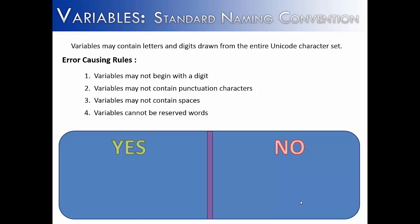The fourth rule is variables cannot be reserved words. As you familiarize yourself with Java, you'll find that there are several words specific to the language. It's not a huge set of words, but it is enough to be wary of. You cannot name a variable void, or class, or this, because all of these are words used specifically for coding in Java. If you try to name them this way, the computer will not allow it. On the other hand, if you used capital-V Void, which is different from void, that would work. If you said classC instead of class, or thisOne instead of this, all of these would work. You just really have to stay away from reserved words.